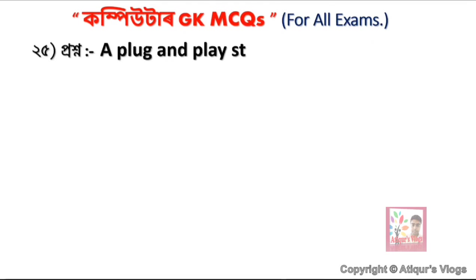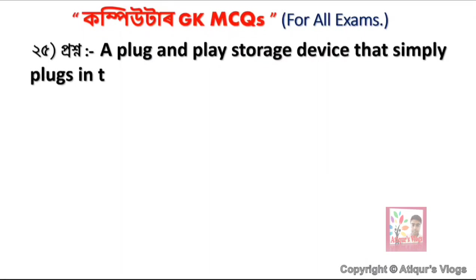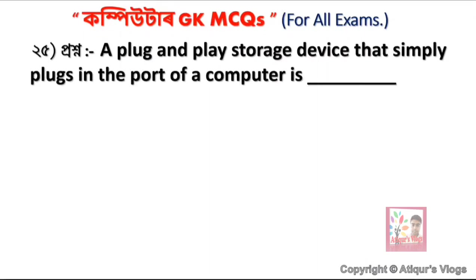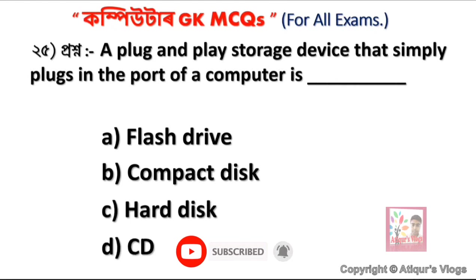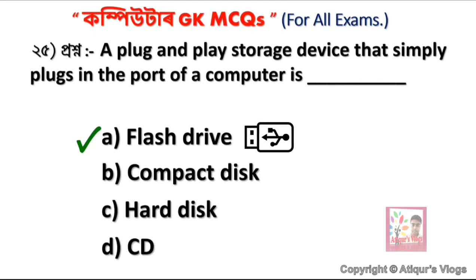A plug and play storage device that simply plugs into the port of a computer is — option A Flash Drive, option B Compact Disk, option C Hard Disk, and option D CD. The correct answer is option A — Flash Drive. A pen drive is plug and play and is known as a Flash Drive.